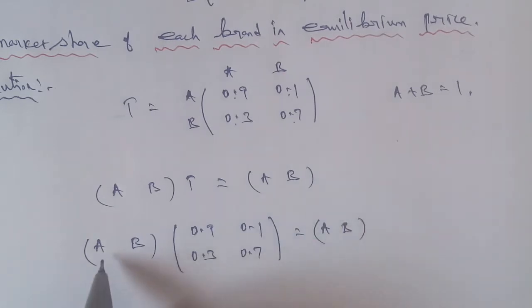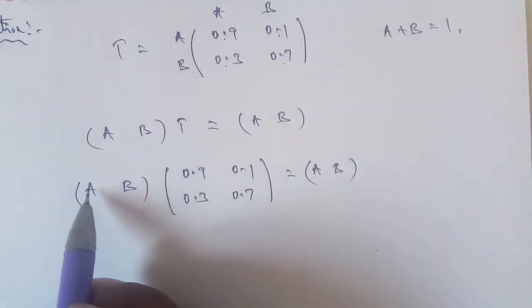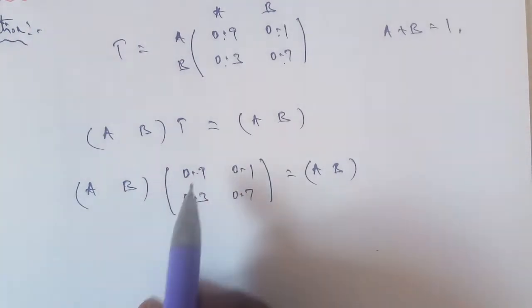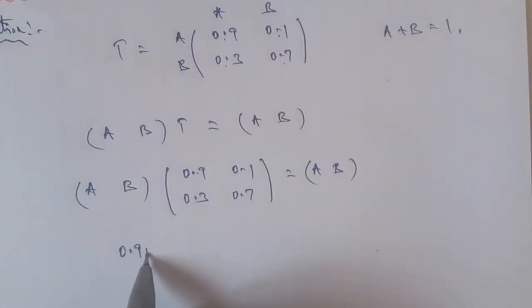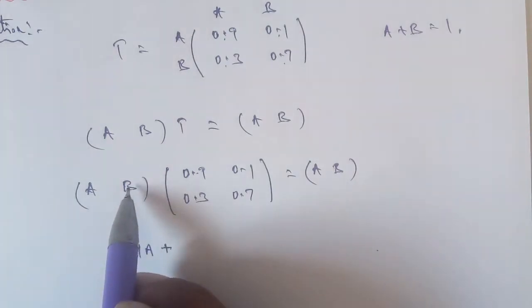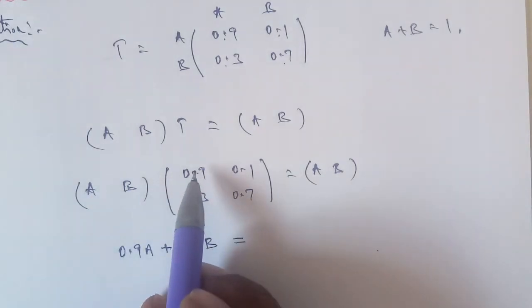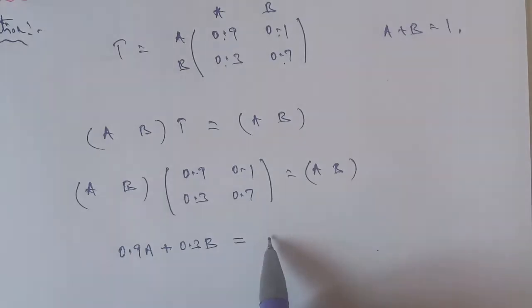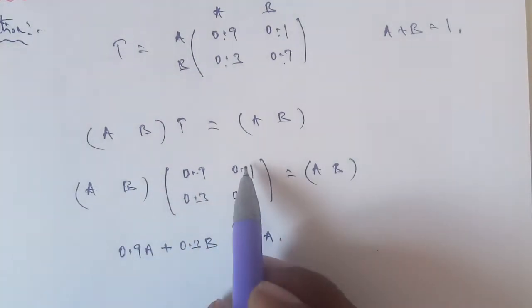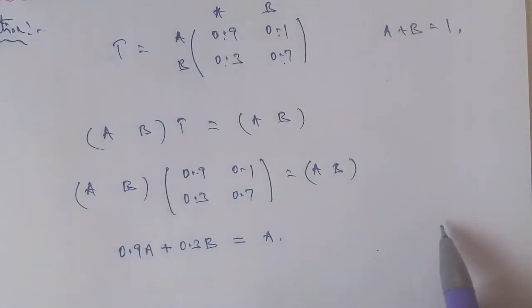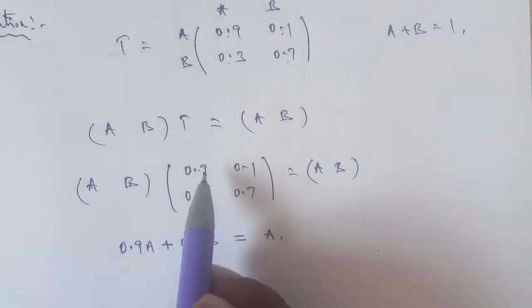Here is the first row, first column apply. First row first column: A times 0.9 plus B times 0.3 equals 0.9A plus 0.3B equal to A.